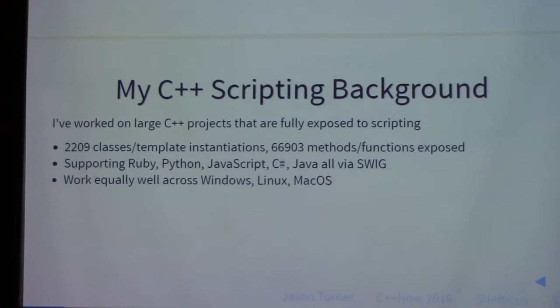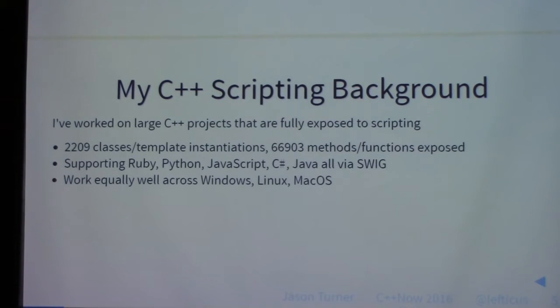The main project I work on has extremely large exposure to Ruby Swig specifically. We've got 2,209 classes and template instantiations that we're exposing to Ruby, which is a total of approximately 67,000 methods. This tool supports Ruby, Python, JavaScript, C#, and Java all using Swig, and we have to support Windows, Mac, and Linux.